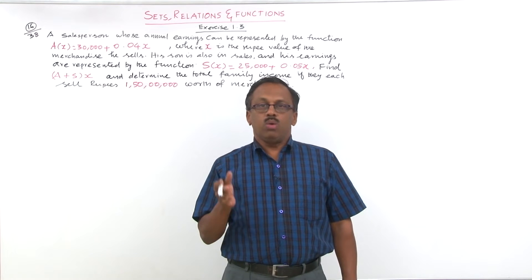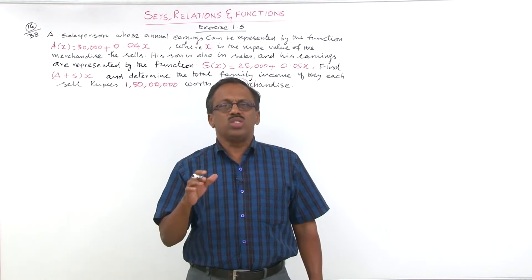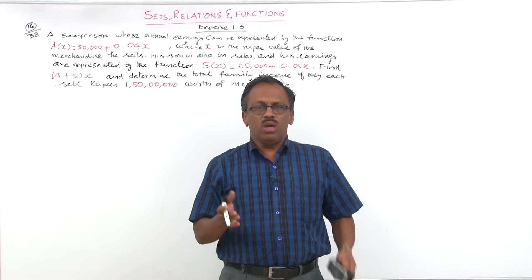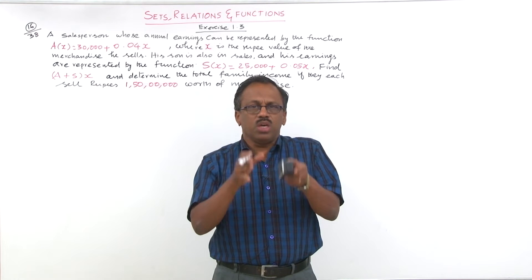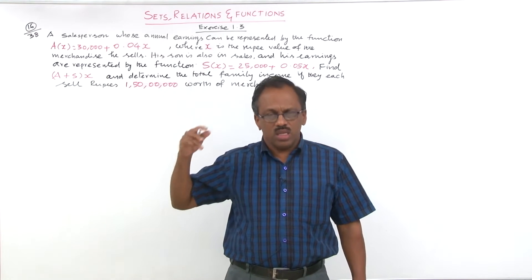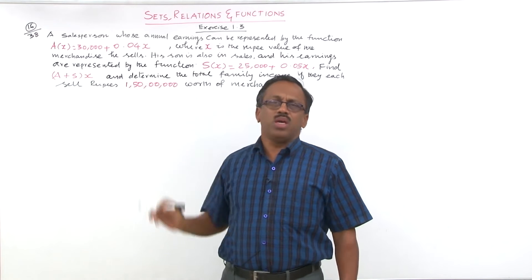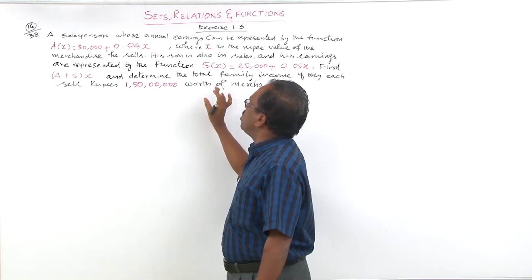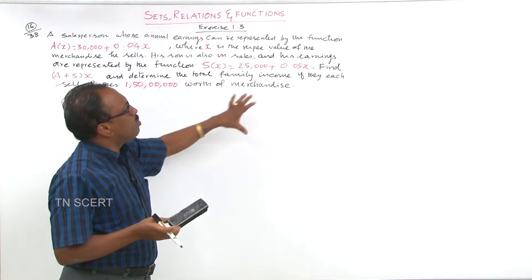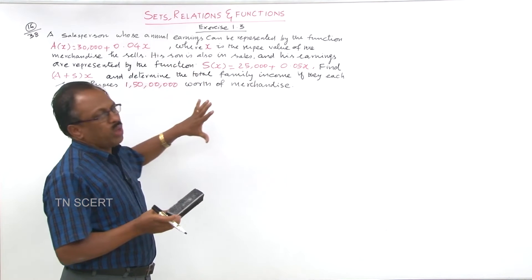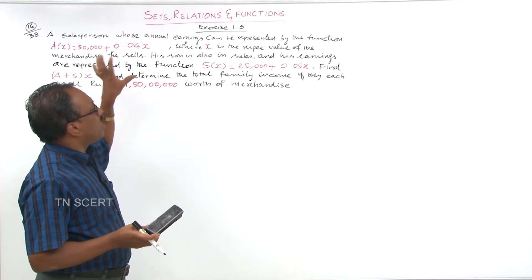What functions are there? 1 to 1, onto — all these things are there. In terms of sets and functions you might have seen about the composition of functions. Here let us see a problem related with the composition of functions. It is a pure application sum. In exercise 1.3, problem number 16, we discuss about composition of functions and we are going to arrive at a peculiar result.